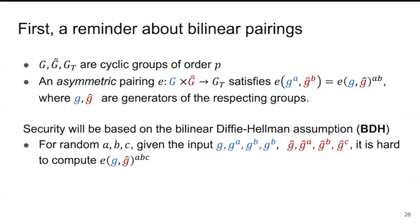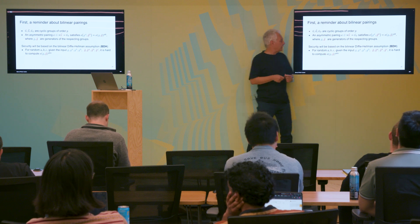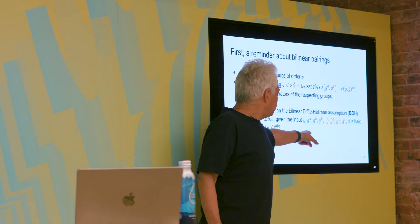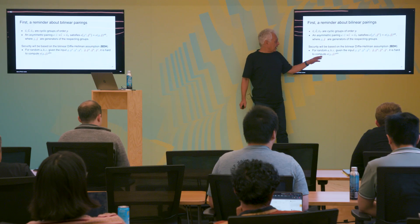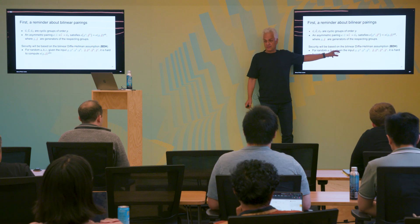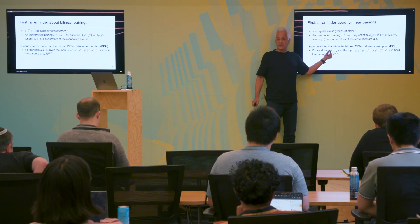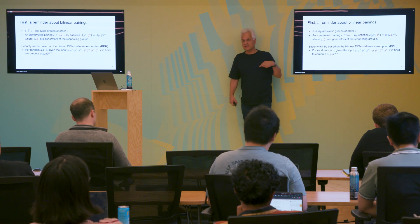The construction uses bilinear pairings. We have two groups G and G-hat and a target group G_T. An asymmetric pairing is a function taking elements from G and G-hat and mapping to G_T, with the property that e(g^a, g_hat^b) = e(g, g_hat)^{ab} - the exponents multiply. Security is based on the bilinear Diffie-Hellman assumption: given g, g^a, g^b, g^c in one group and the same exponents in the second group, it's hard to compute e(g, g_hat)^{abc}.